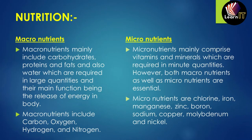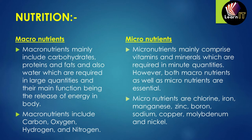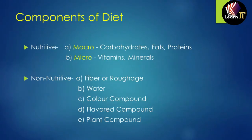Nutrition has been divided into two types: macronutrients and micronutrients. Macronutrients include larger molecules — carbohydrates, proteins, and fats, as well as water — which are required in larger amounts. Their main function is to release energy inside the body. Elements such as carbon, oxygen, hydrogen, and nitrogen are included in macronutrients. Micronutrients are the opposite — they comprise small quantities, meaning vitamins and minerals required in very trace amounts, such as chlorine, iron, manganese, zinc, boron, sodium, copper, molybdenum, and nickel.